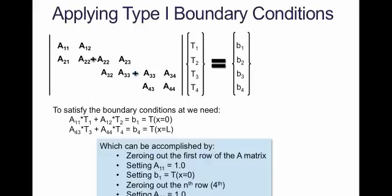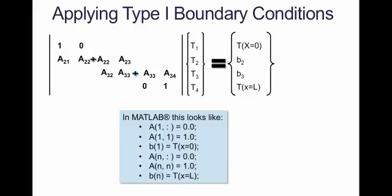If we zero out the last row of the system, set A44 - basically set the value on the diagonal equal to 1 - and set the right-hand side equal to T at x=L, then we will satisfy the boundary condition and T4 will be equal to T at x=L. So this is what the system looks like.